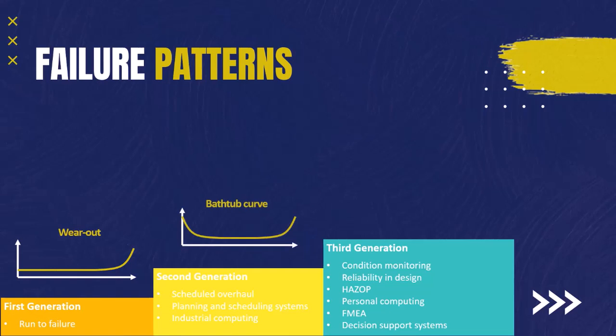In the second generation, they started to notice that some assets face many problems when they are just new or just been installed — maybe because of a manufacturing issue, installation issue, defective part, or design issue. Then the rate of failure starts getting lower as those issues are eliminated, then remains constant for most of the asset's life before increasing again in the aging phase. This curve is very common with consumer electronics like smartphones.